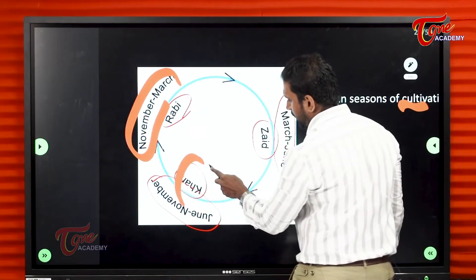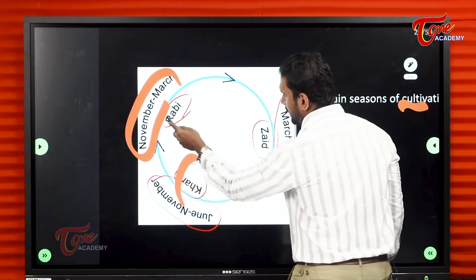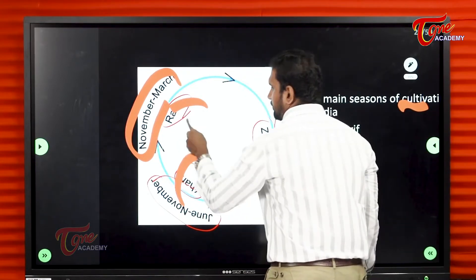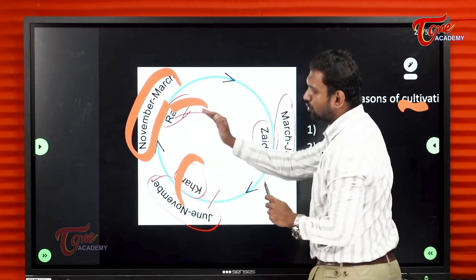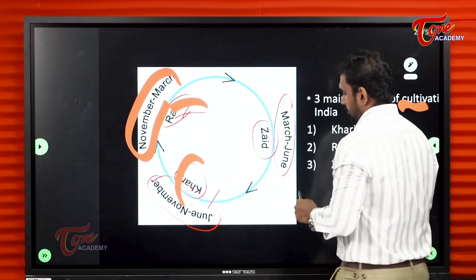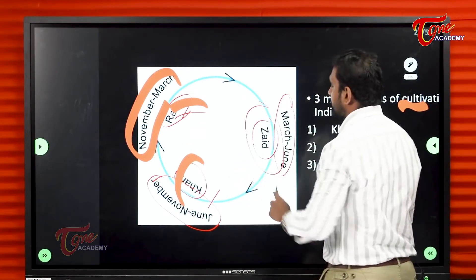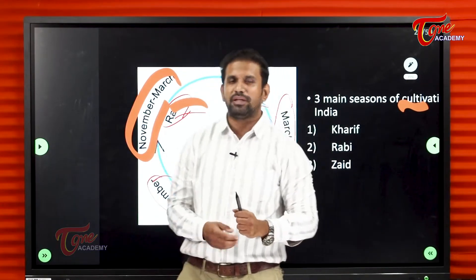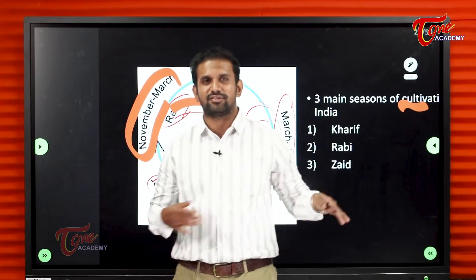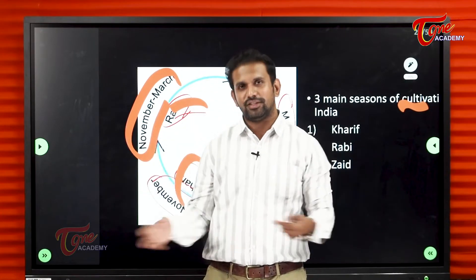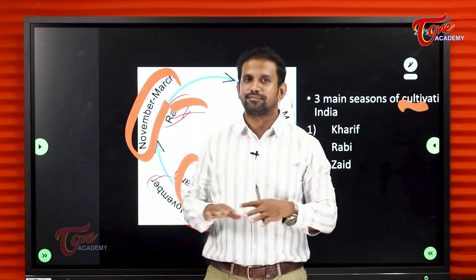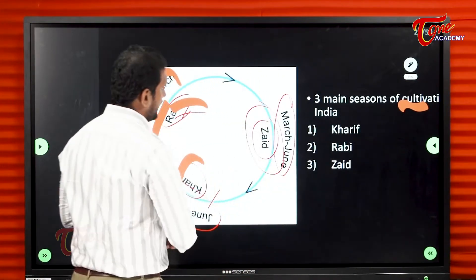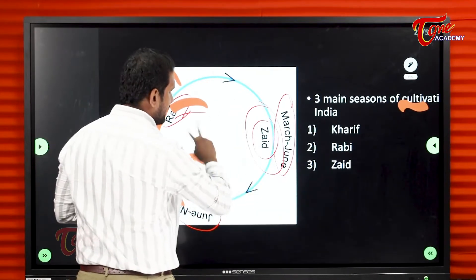Rice is a very very important crop of Kharif. Wheat is a very very important crop of Rabi. Cotton also comes in Kharif. Then barley comes in Rabi. Very importantly, in the Zaid season from March to June, we grow vegetables and fruits — it is a very good season for fruits and vegetables. So we have three important crop groupings: Kharif, Rabi, and Zaid.